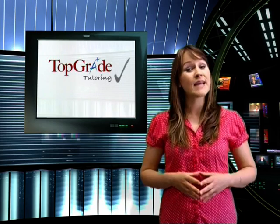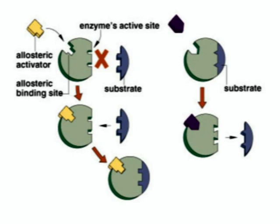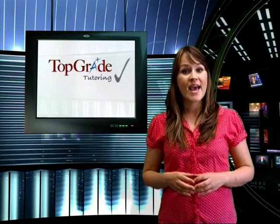So how do enzymes actually work? All enzymes have an active site. A substrate molecule binds to the active site, forming what is known as an enzyme-substrate complex. The substrate is then broken down into smaller molecules. All enzymes are specific, only breaking down certain substrate molecules. Once the substrate has been broken down, the enzyme is ready for use again.